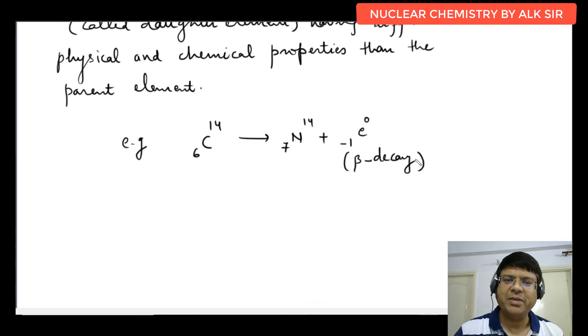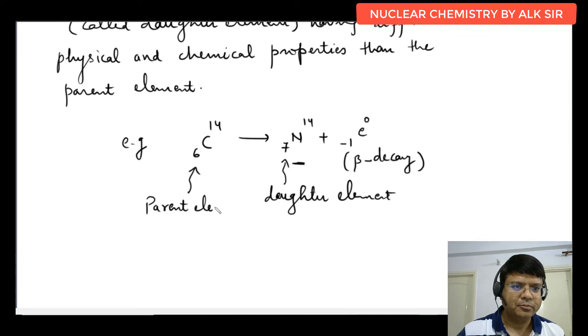Radioactivity ka matlab alpha, beta and gamma decay. Because of this new element, so this is called daughter element and this is parent element. So like that you will remember.